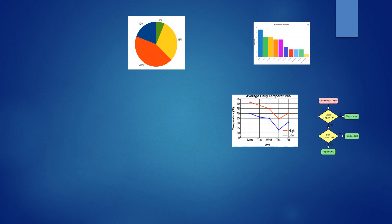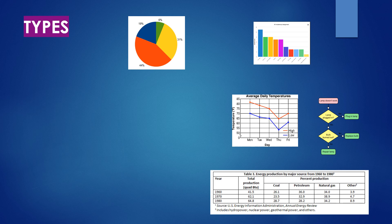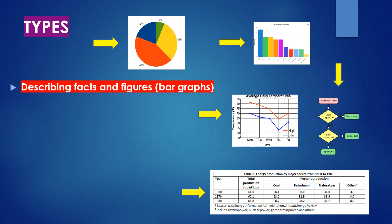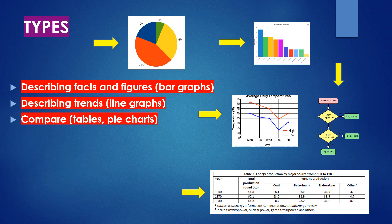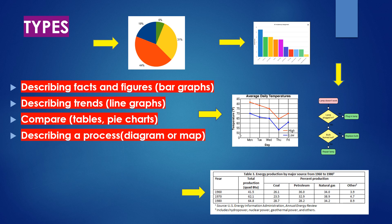Let's take a look at the types of graphs. We can get anything like a pie chart, bar graph, line graph, table, or flow chart. If you want to describe facts and figures, take help of bar graphs. Describe trends through line graphs, comparisons through tables and pie charts, describe a process diagram or map, and describe a flow chart.